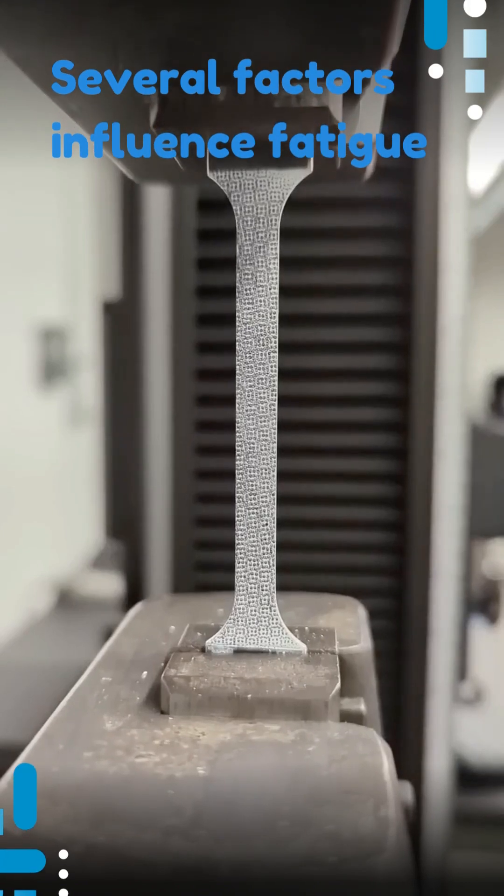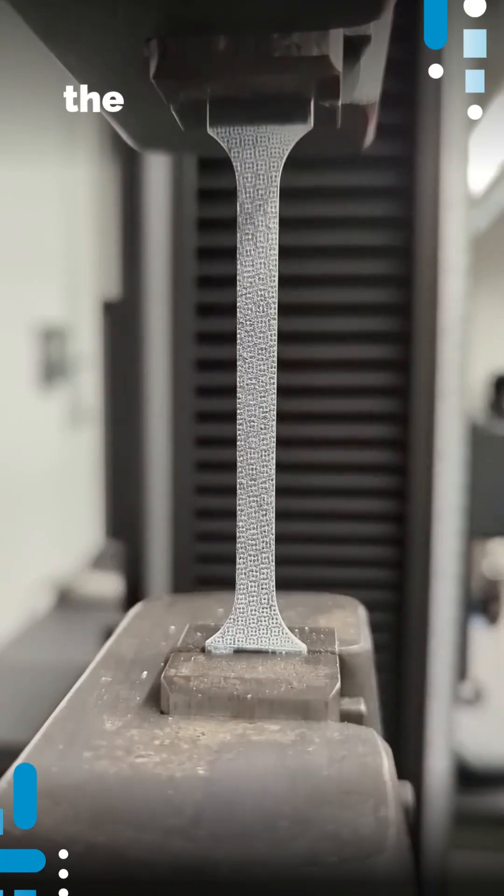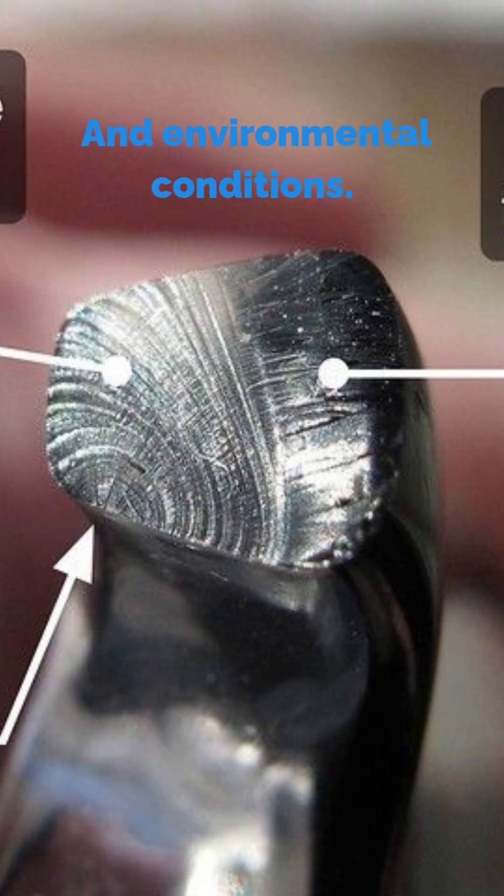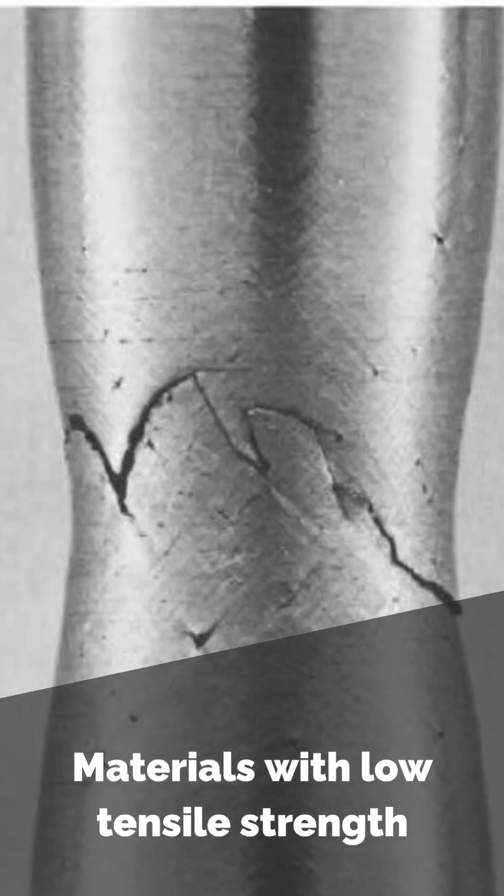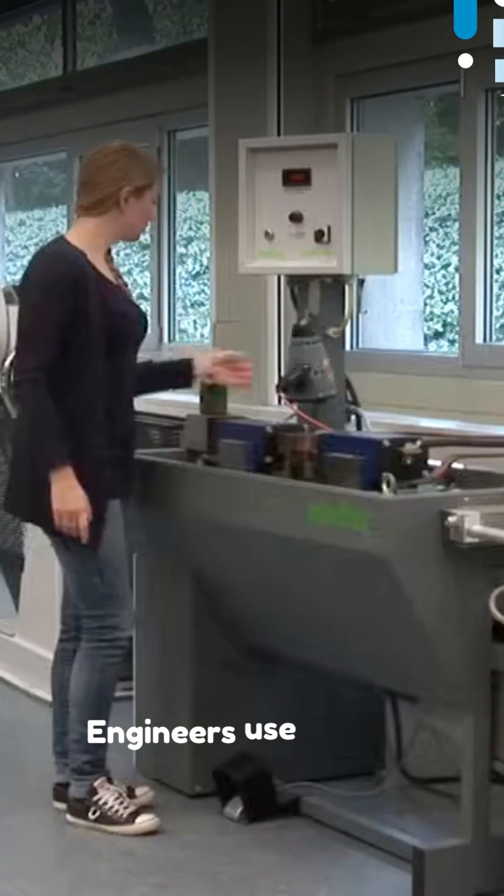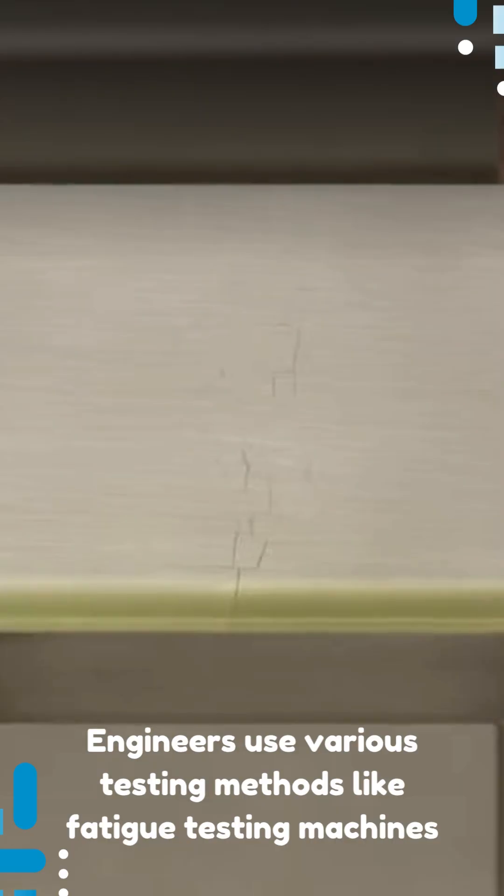Several factors influence fatigue, including material properties, the magnitude of the load, the number of cycles, and environmental conditions. Materials with low tensile strength, like brittle metals, are more prone to fatigue failure.